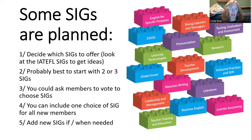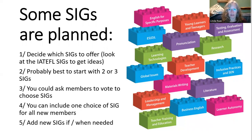It doesn't have to start like that though — it can be planned special interest groups, and you as the teaching association can decide which ones to plan. Have a look at some of these here. You need to decide which SIGs you're going to offer your members. On the right here we have all of the IATAFL SIGs: English for specific purposes, young learners and teenagers — all of these have an acronym, like young learners and teenagers is YLT — testing, pronunciation, research, teacher development, inclusive practices, global issues. All of these are different special interest groups that people in IATAFL join because they are passionate about that topic and they want to meet and work with lots of other teachers who also love that specific special interest within teaching English.